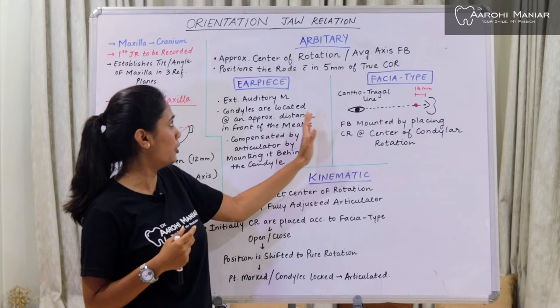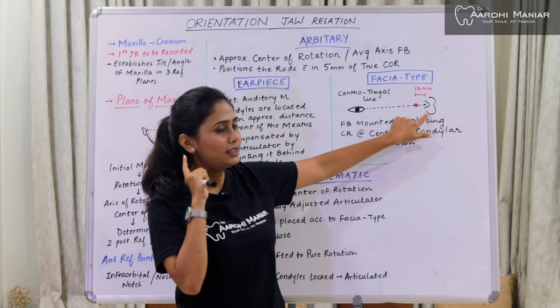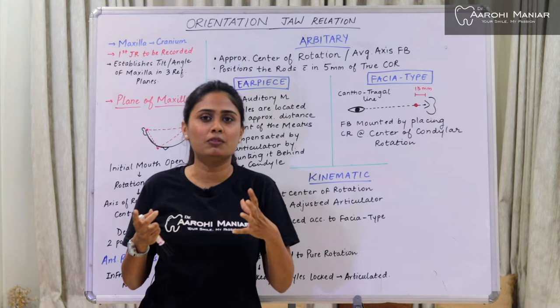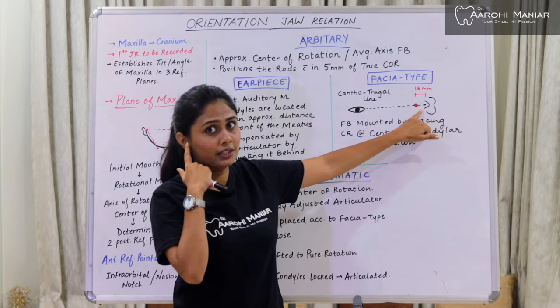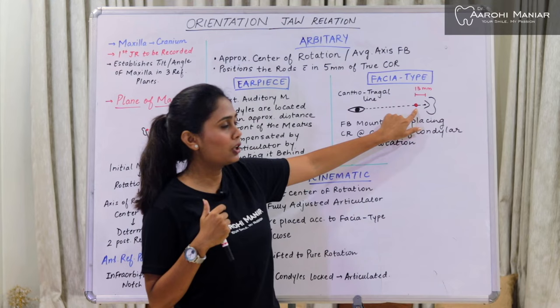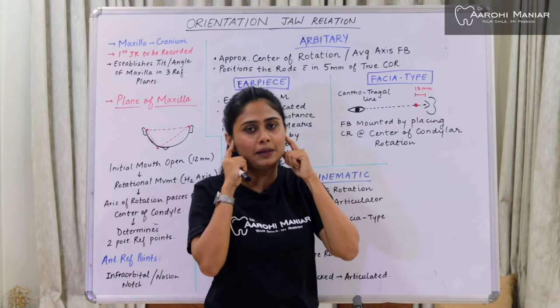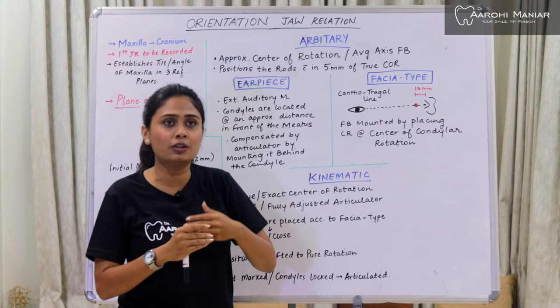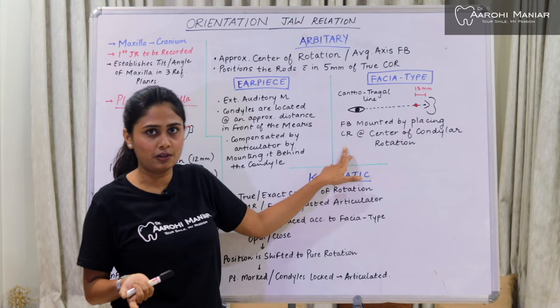The other type is the fascia type of face bow. The line drawn from the outer corner of our eye to the middle of the tragus — the triangular part in front of our ears — is known as the cantho-tragus line. In the fascia type of face bow, we put our condylar rods 13 mm in front of the tragus on the cantho-tragus line. This is a bit more exact and nearer to the center of condylar rotation, but it is still not exact, which is why it is still under the arbitrary face bow category.